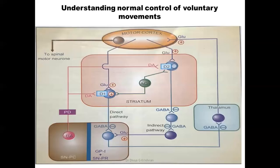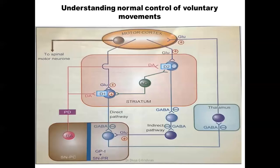In Parkinson's disease there is progressive degeneration of dopaminergic neurons in the substantia nigra. As a result, the inhibitory control on the basal ganglionic GABAergic neurons is decreased. More GABA becomes available, which inhibits the thalamus, and the excitatory connections from the thalamus are also inhibited. That is why we get decreased movement — hypokinesia — in Parkinson's disease.